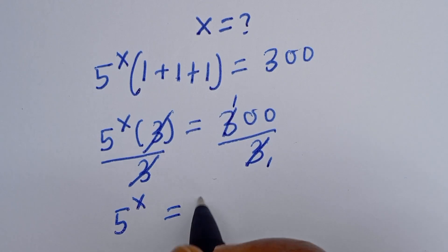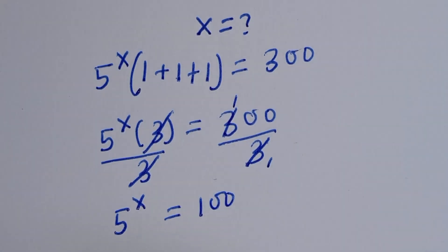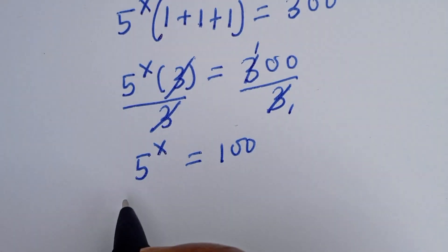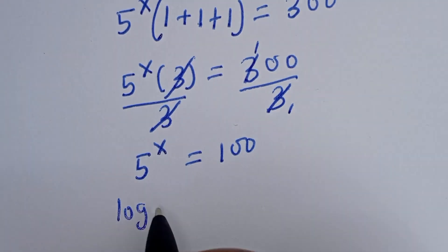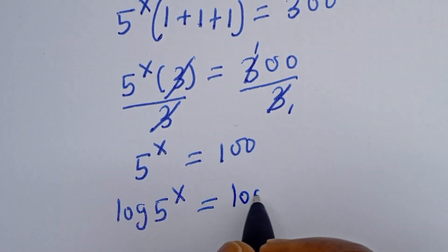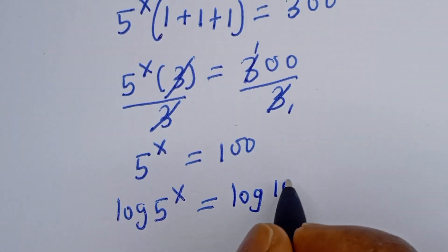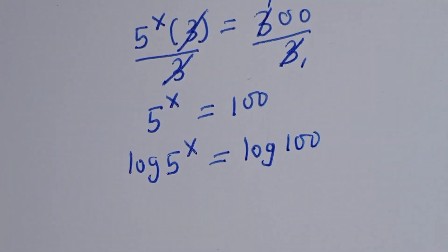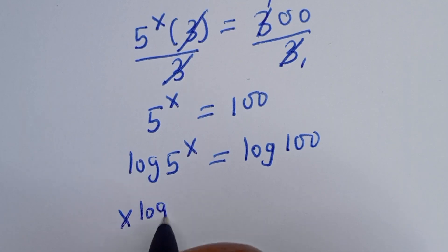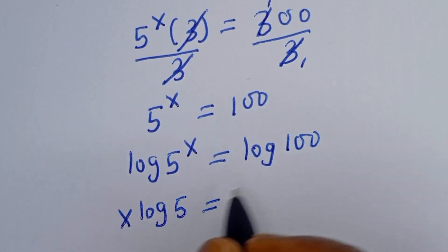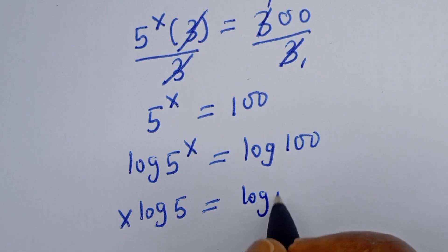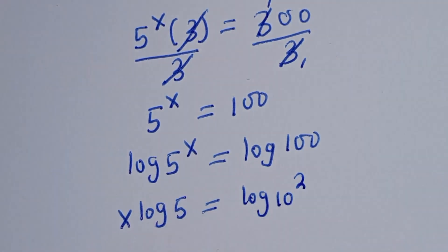So we have 5 to the power of s is equal to 100. Now at this point we are looking for the value of s. Let's take the log of both sides: log of 5 to the power of s is equal to log 100. Then here we have s log 5 is equal to log 100, which can be written as log 10 squared.